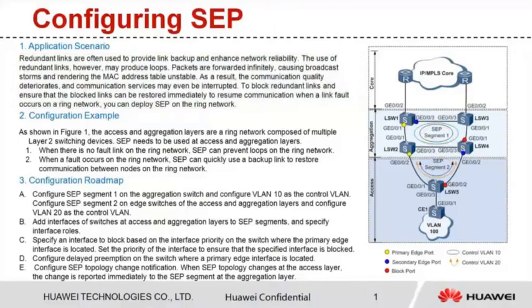Let's see a configuration example. As shown in Figure 1, the access and aggregation layers are a ring network composed of multiple layer 2 switching devices. SEP needs to be used at access and aggregation layers.